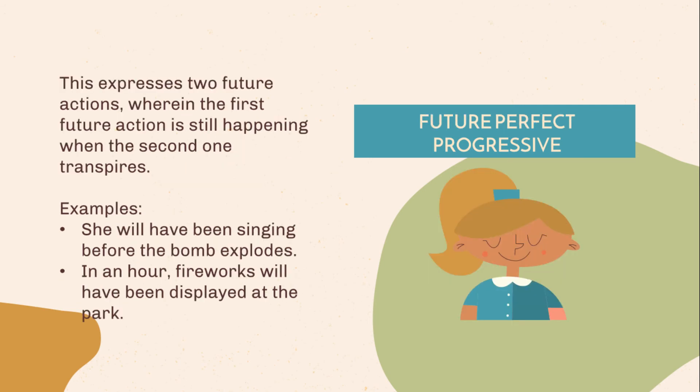Future perfect progressive. This expresses two future actions wherein the first future action is still happening when the second one transpires. Examples: She will have been singing before the bomb explodes.